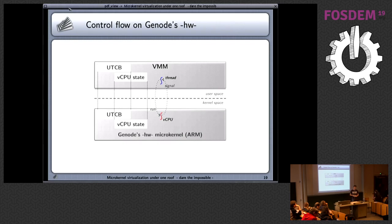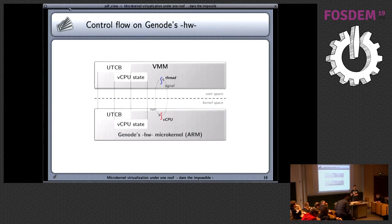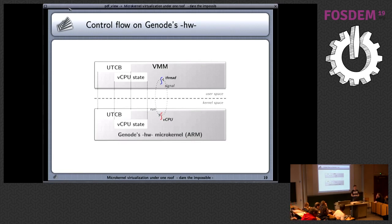For the kernel developed by Genode, it's done more non-blocking and asynchronously. When your VCPU exits, the VCPU is stopped. The kernel sets up an asynchronous notification, and the next time the VMM thread is scheduled, the signal is delivered. When you want to resume the VCPU, you make a non-blocking call to the kernel. This means the VMM thread is always ready to do something else in the meantime — it's never blocking.